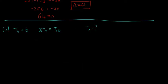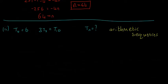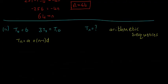Here's the second example. It reads: t(4) = 6, and 3 × t(2) = t(10). We need to find the general term t(n) for this arithmetic sequence. Again, we start by writing t(n) = a + (n − 1) × d. What we're looking for here is a and d, because once we have both, we have t(n) — the general form that the question is asking us for.